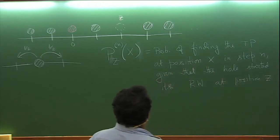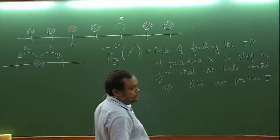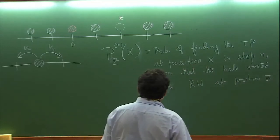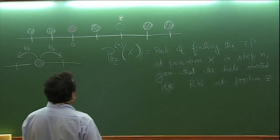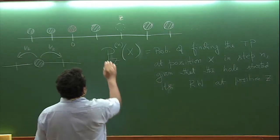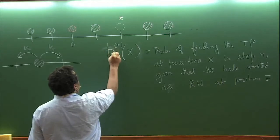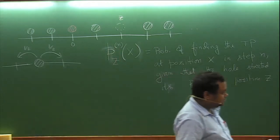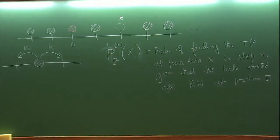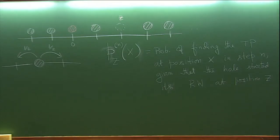I will always consider that the tag particle is always starting from position 0. The hole starts at position z. This is the probability of finding the tag particle at position x at step n, given that the hole started its random walk at position z. So we want to compute this quantity.